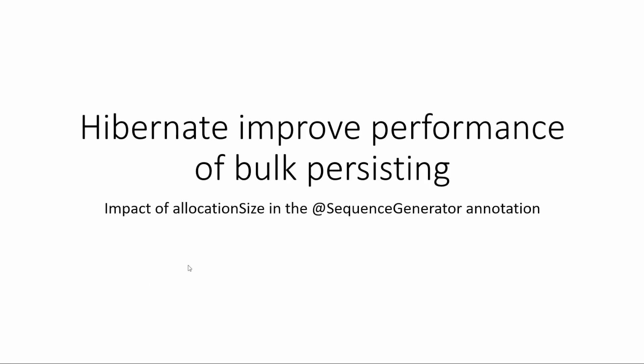Hi everyone and welcome to this session. Today I want to discuss a performance issue when configuring the identity for an entity in Hibernate. We will discuss the allocation size in the sequence generator annotation and how this could have a negative impact on performance. Let's get started.